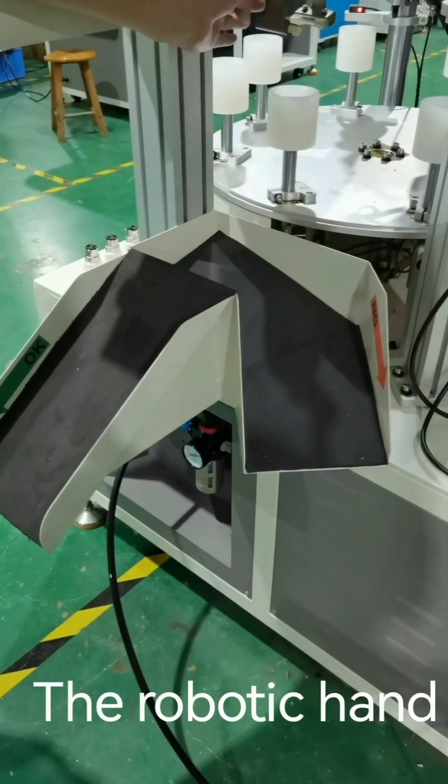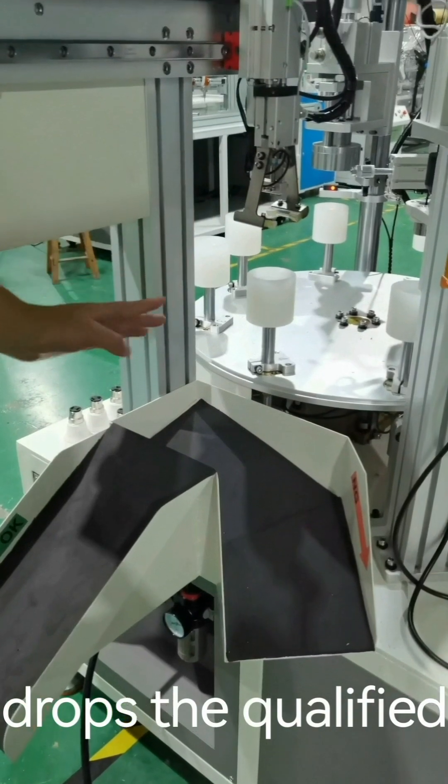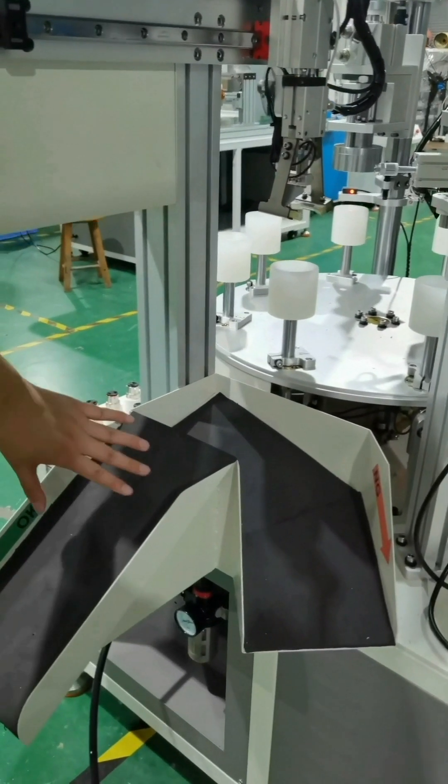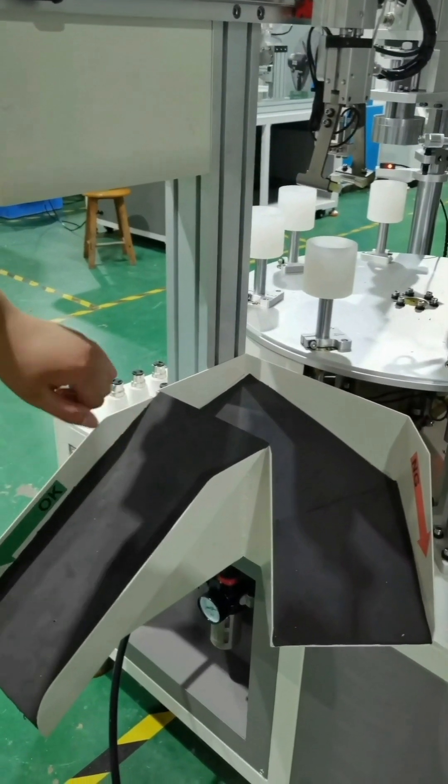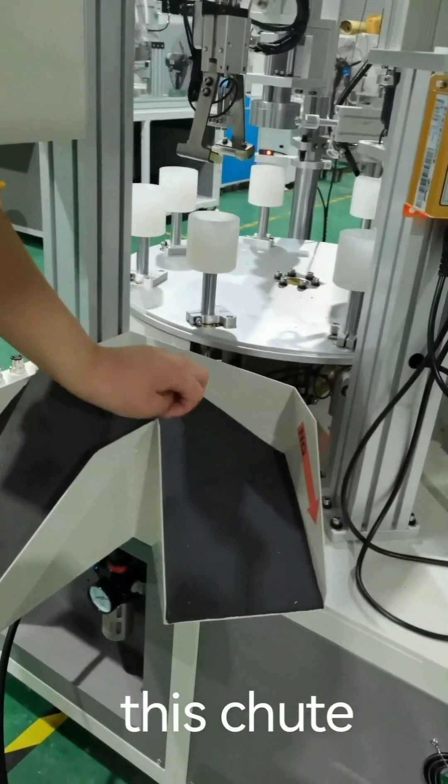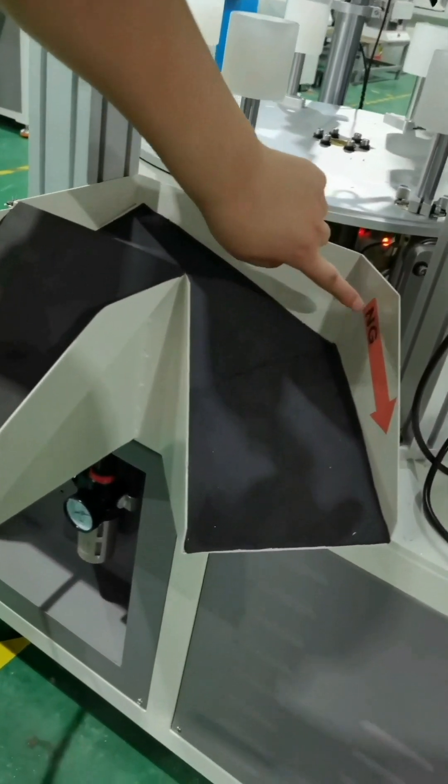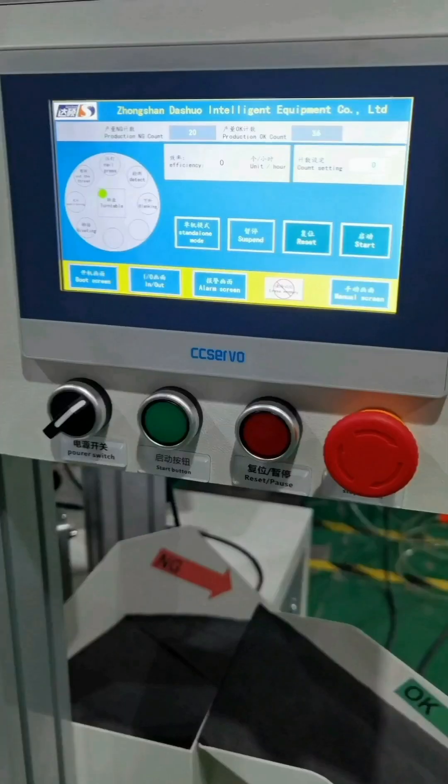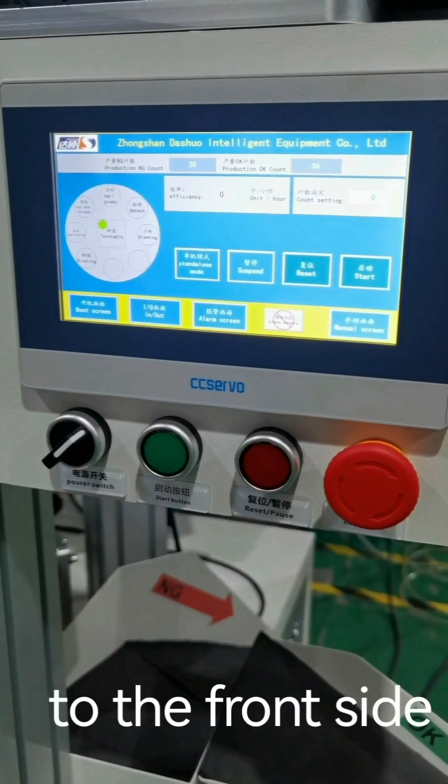The robotic hand drops the qualified products into this chute, while the non-qualified products go to this chute. NG mark. OK mark. Now let's return to the front side.